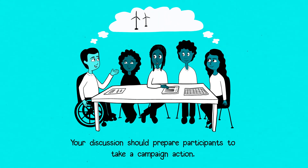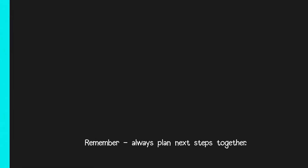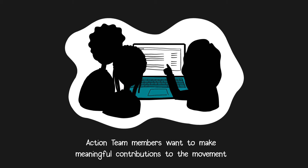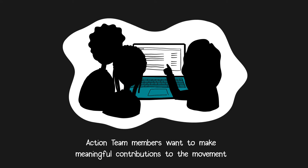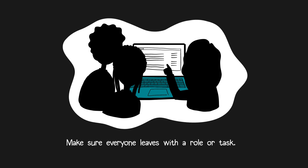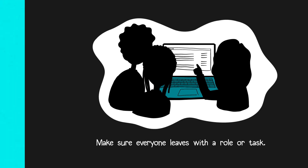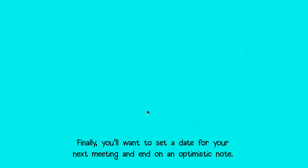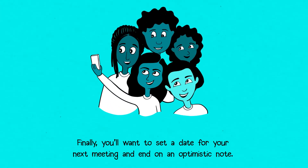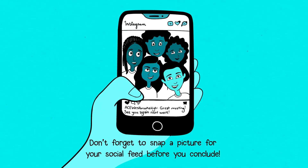Your discussion should prepare participants to take a campaign action. Remember, always plan next steps together. Action team members want to make meaningful contributions to the movement and have something to report on at the next meeting. Make sure everyone leaves with a role or task. Finally, you'll want to set a date for your next meeting and end on an optimistic note. Don't forget to snap a picture for your social feed before you conclude.